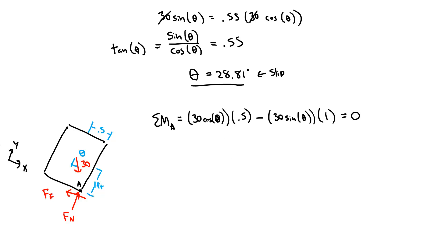I can do a similar thing here. I've got a sine and cosine, I'm going to do that same tangent piece. If I say 30 cosine theta times 0.5 equals 30 sine of theta, the 30s cancel out. So 0.5 equals sine theta over cosine theta. Sine theta over cosine theta equals tangent of theta.